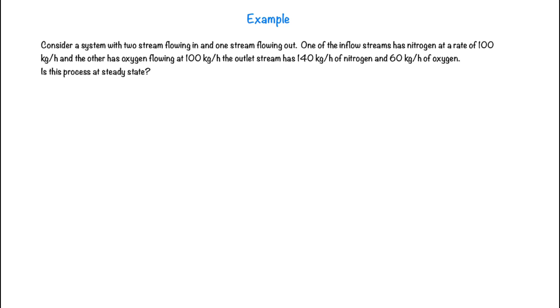If we look at the following process of a system with two streams flowing in and one stream flowing out. One of the inflow streams has nitrogen flowing at a rate of 100 kilograms per hour and the other has oxygen also flowing at 100 kilograms per hour. The outlet stream has 140 kilograms per hour of nitrogen and 60 kilograms per hour of oxygen.